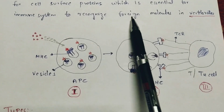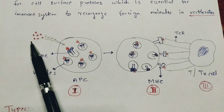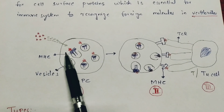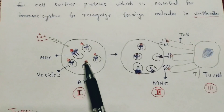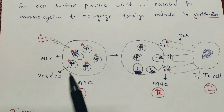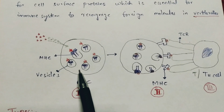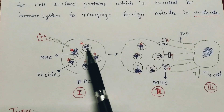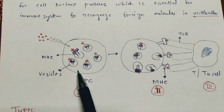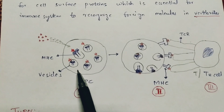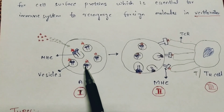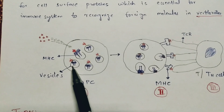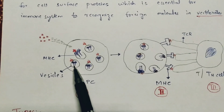When foreign antigens enter into the antigen presenting cell, this cell consists of vesicles, and inside those vesicles MHC molecules are present — shown here in blue. When the foreign antigens enter the APC, the vesicles open and the MHC molecule receives and binds to the antigen.